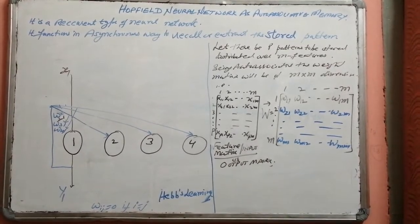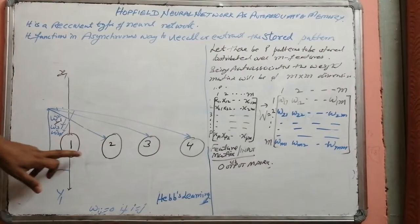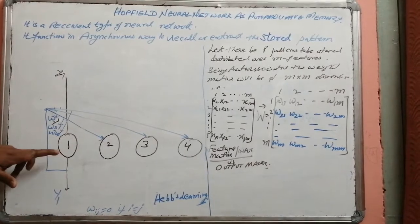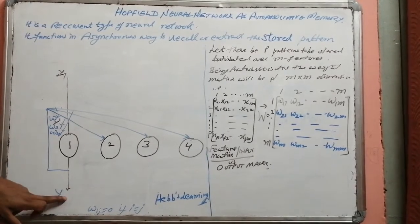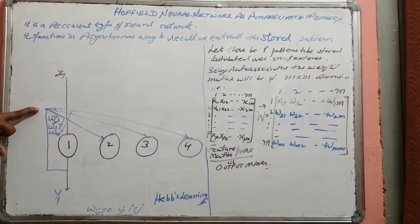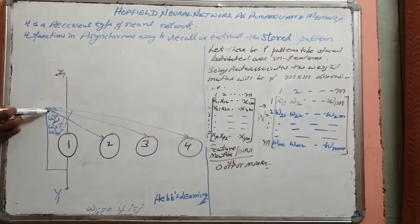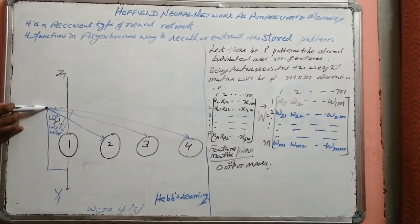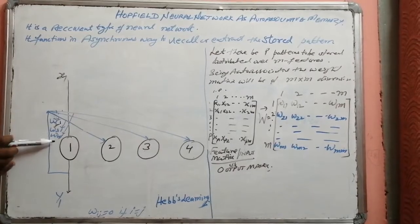Now let us discuss its architecture. Neuron number one of the input or output layer will be receiving X1 as input and will produce Y1 as output. This Y1 output will be recurrent back to other neurons: it will go to neuron number two as weight W21, to neuron number three as weight W31, and to neuron number four as weight W41.